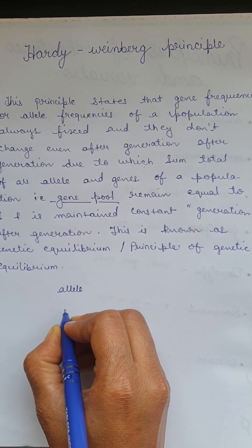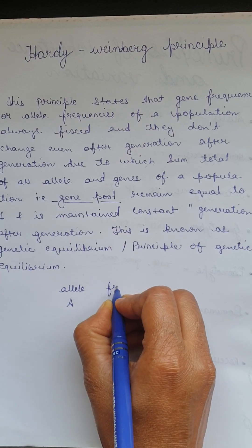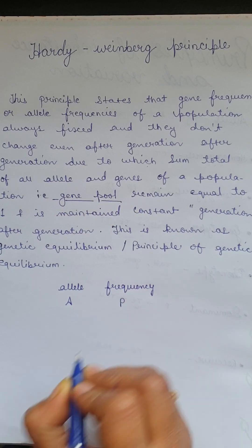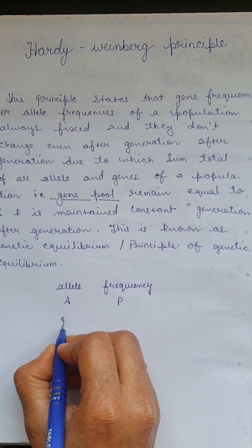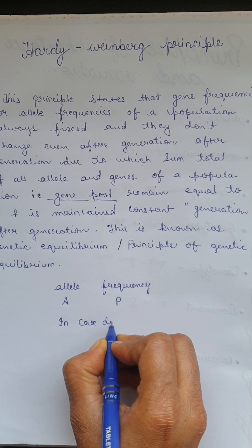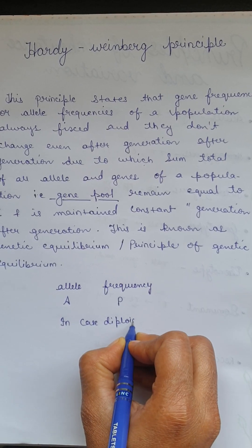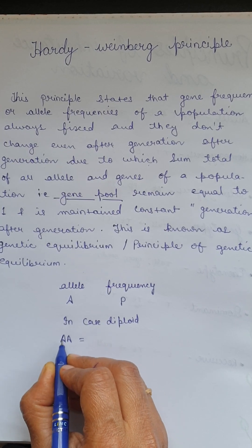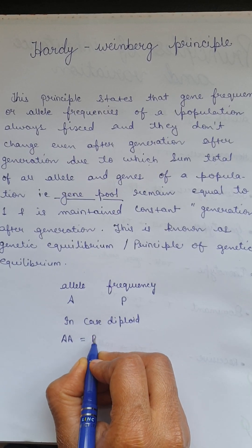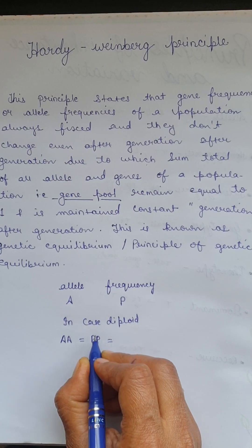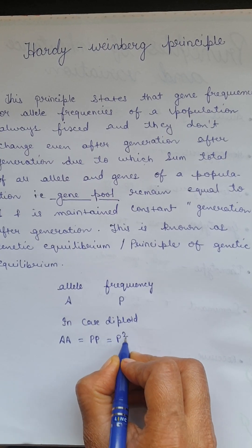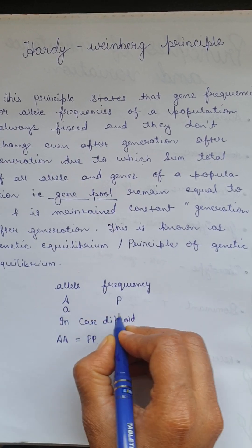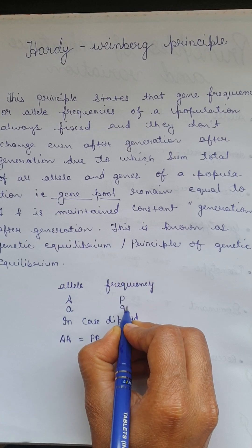Capital A is an allele, and the frequency of this allele is P. Now, in case of diploid, capital A capital A — the frequency of this diploid genotype is written as P squared. Similarly, small a allele has frequency Q.